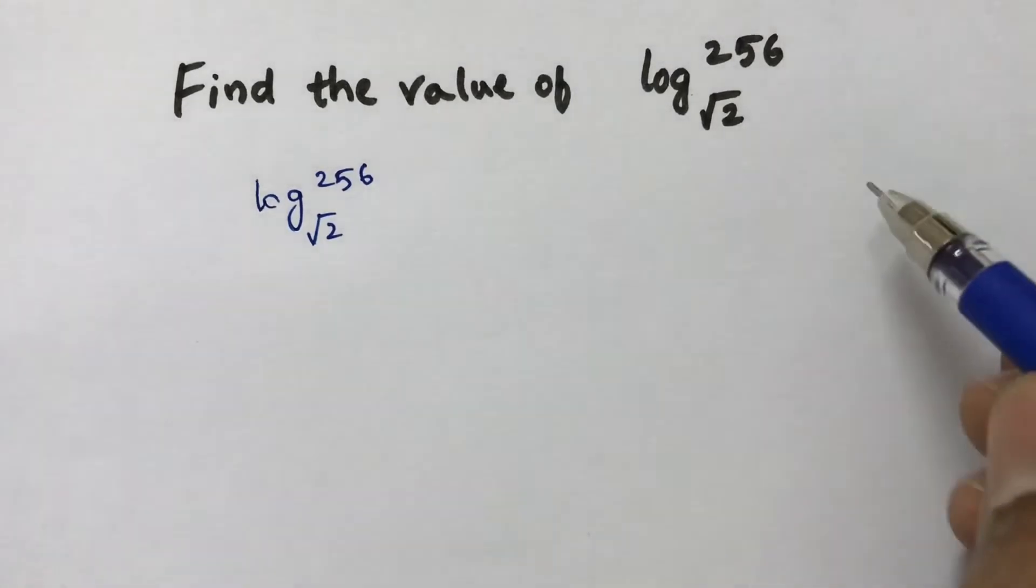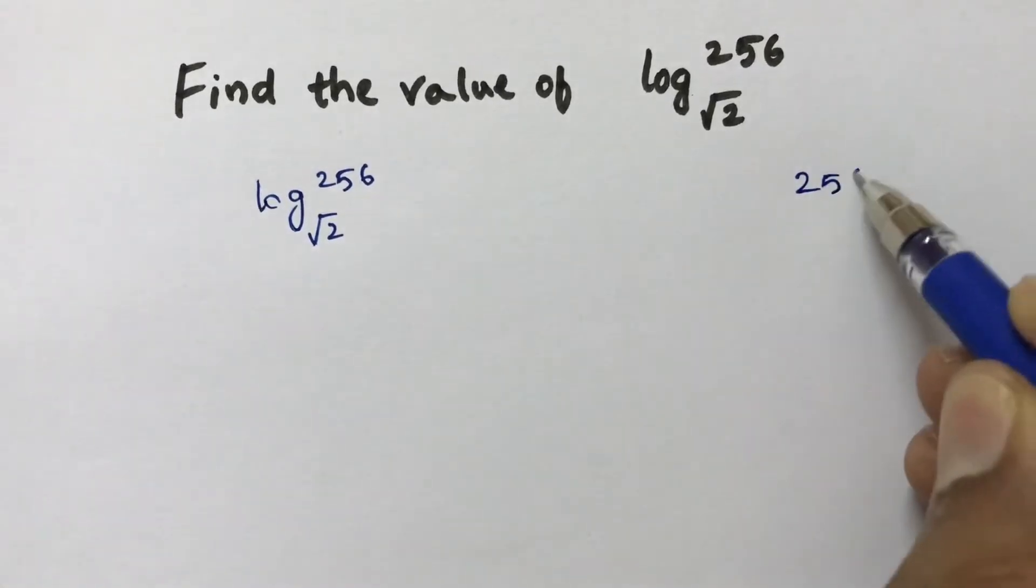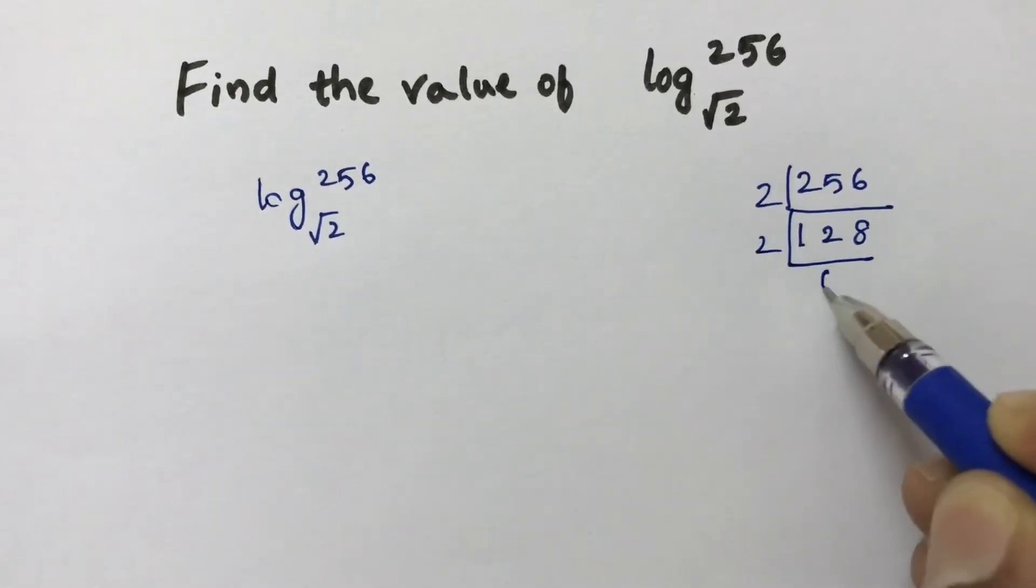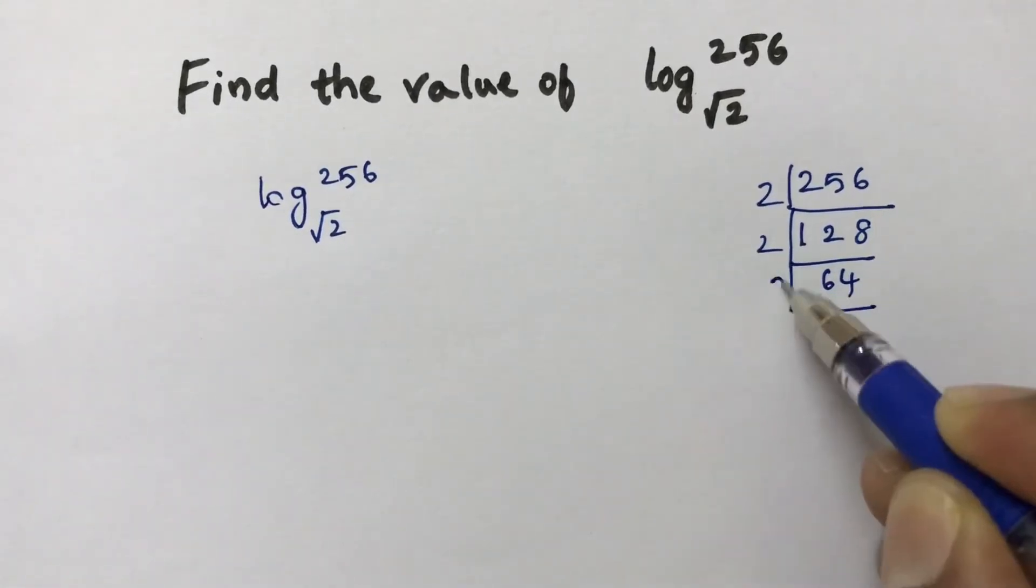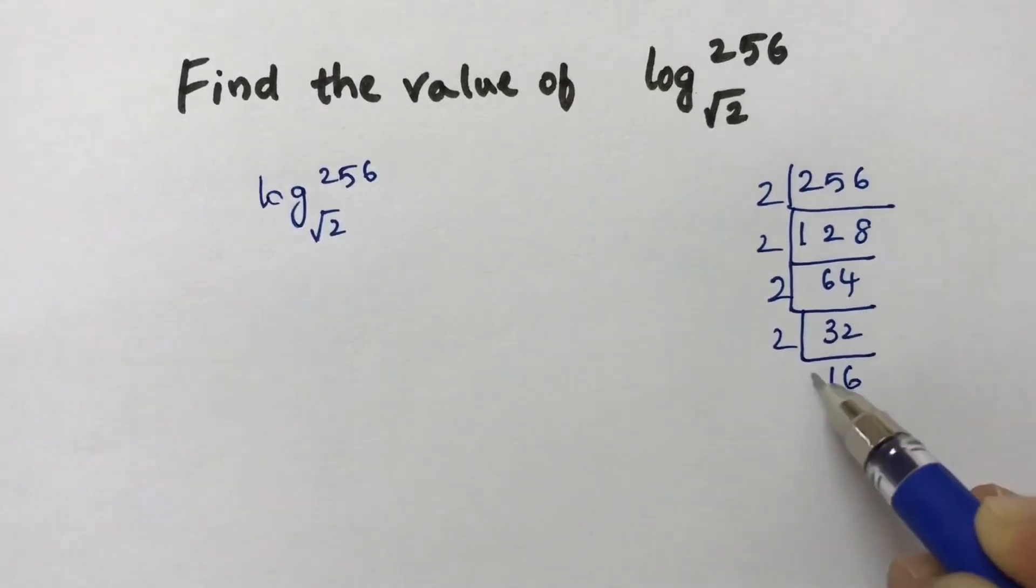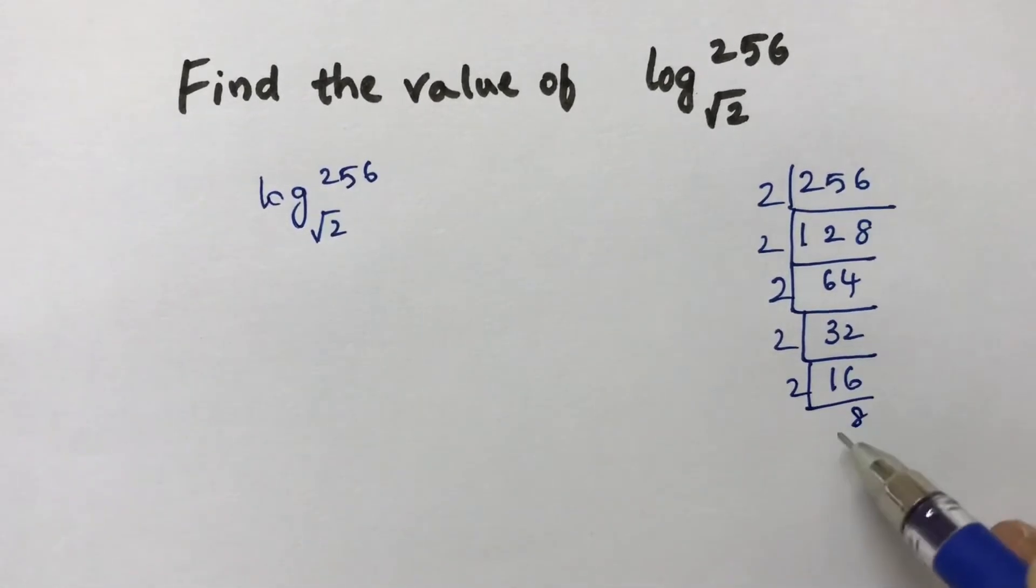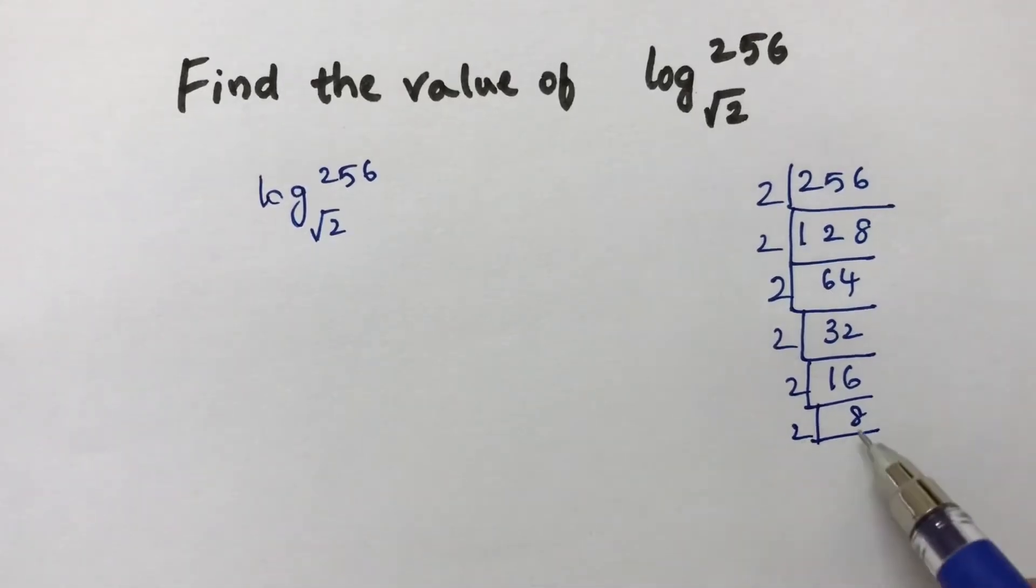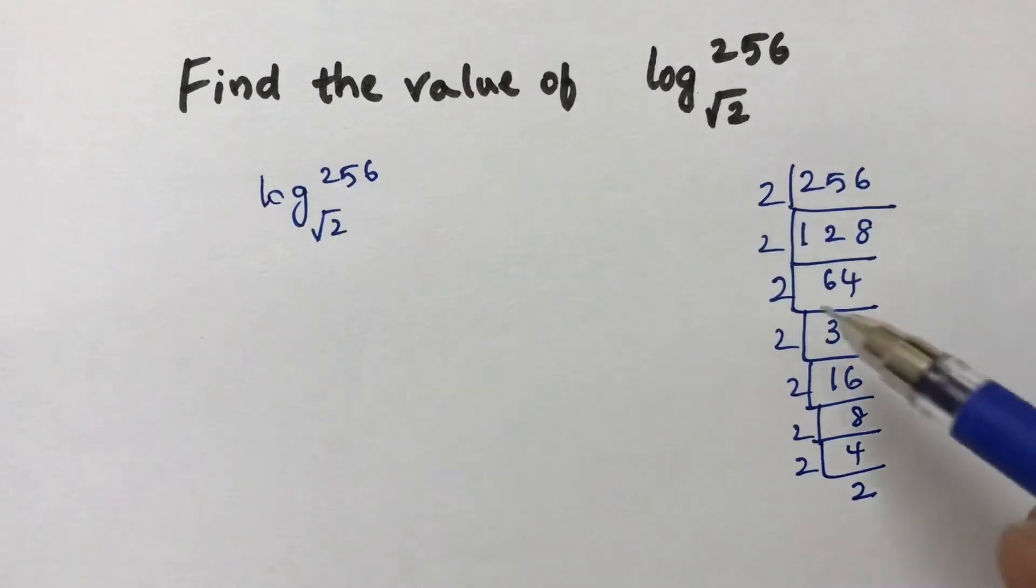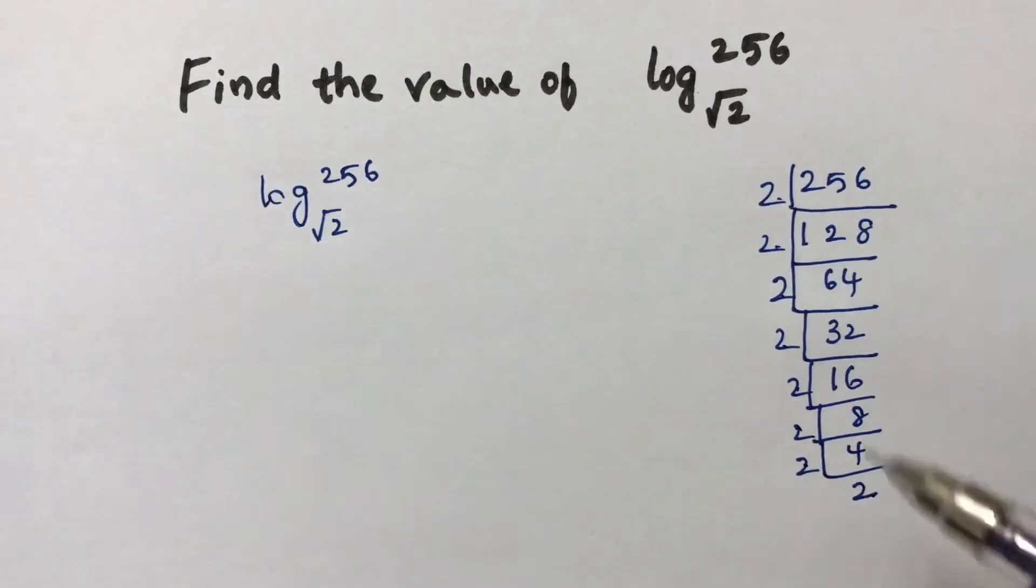If we find the prime factors of 256: 2 times 128, 2 times 64, 2 times 32, 2 times 16, 2 times 8, 2 times 4, 2 times 2. So that's 1, 2, 3, 4, 5, 6, 7, 8 factors of 2.